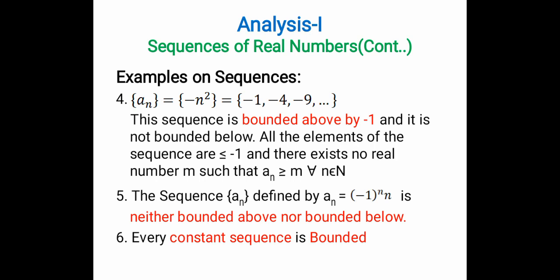So these were the examples which we discussed. The sequence {-n²}, when we expand this we get -1, -4, -9, and so on. Now this sequence is bounded above by -1, and it is not bounded below because there exists no real number m such that aₙ ≥ m for all n ∈ ℕ. Therefore it is not bounded below but it is bounded above by -1, so it cannot be a bounded sequence.